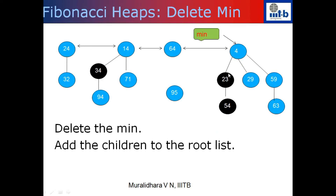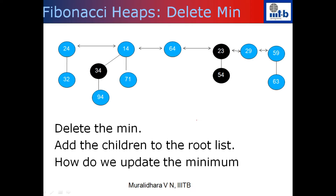To delete the minimum, you already have a pointer to the minimum. So what you do is just delete this element from the root list, but you take each of its children and add them back to the root list. After doing that, the tree would look like this - we deleted the minimum node and added all its children into the root list.